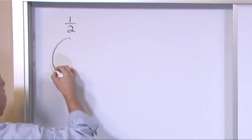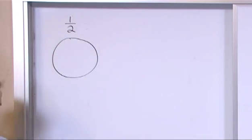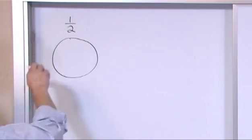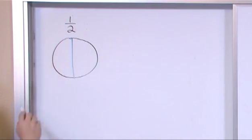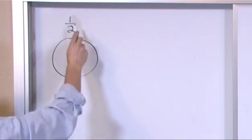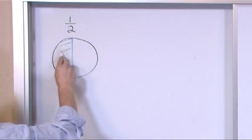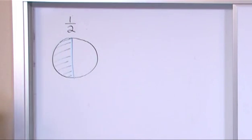It means if I take a pizza, which is right here in front of us, and I divide it into two pieces. That's what the bottom number means. So I'm going to cut it into two pieces. But I don't have both pieces, I only have the top piece. So that means I have half of a pizza.